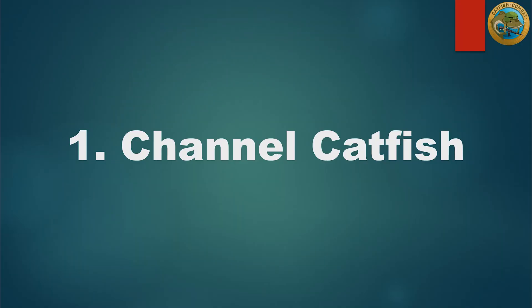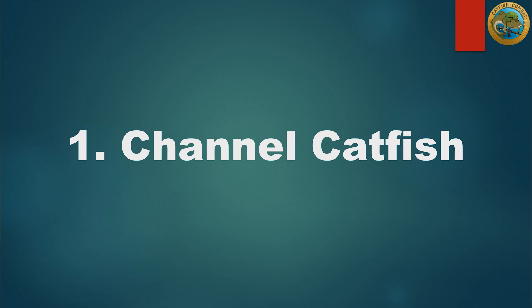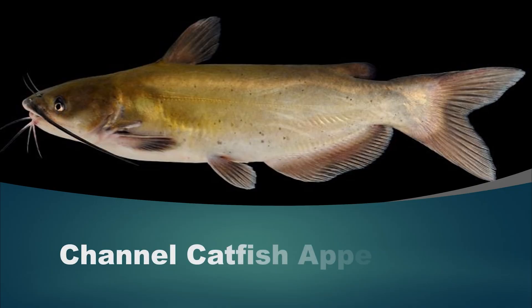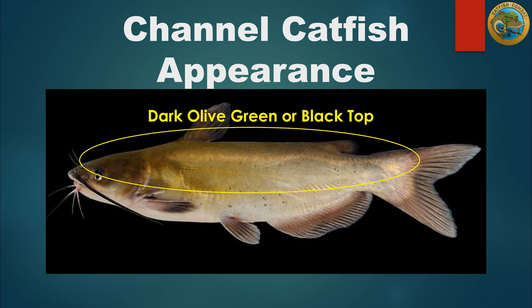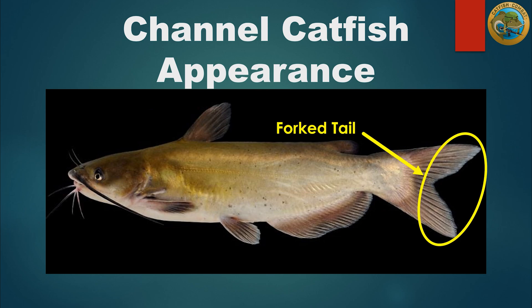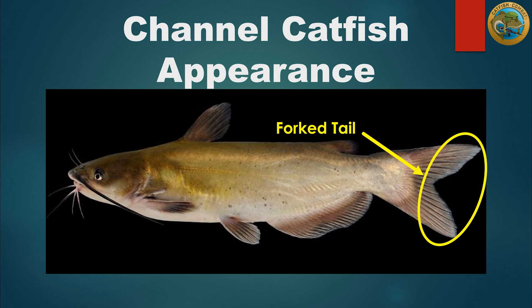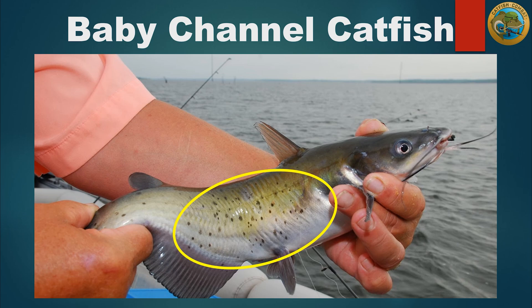The first fish we're going to discuss is the channel catfish. The channel catfish has a dark olive green or black top with a lighter olive green body and a pale underbelly. They have a forked tail, which enables them to achieve high bursts of speed, and they have a rounded anal fin. This is one of the major things that distinguishes them from the blue catfish, as blue catfish have a rectangular anal fin. Baby channel catfish also have many black spots on their bodies, which they will lose as they get older.